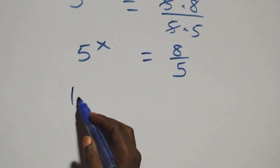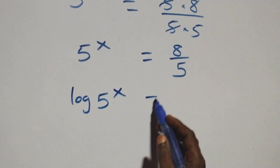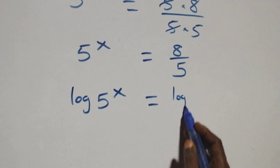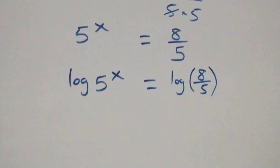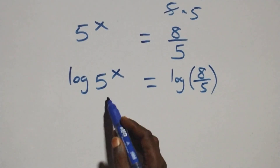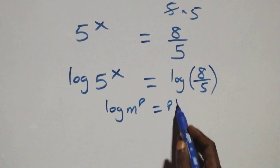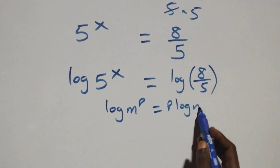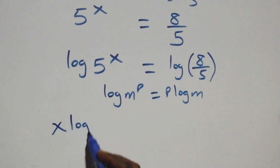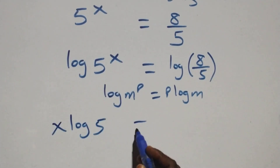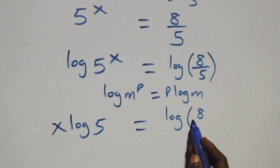We take the log on both sides. We have log of 5 raised to power x equals log of 8 over 5. We apply the power rule of logarithms — log m raised to power p equals p log m. So this becomes x times log 5 equals log of 8 over 5.